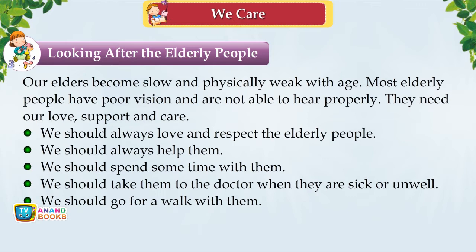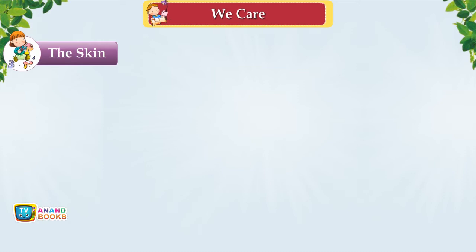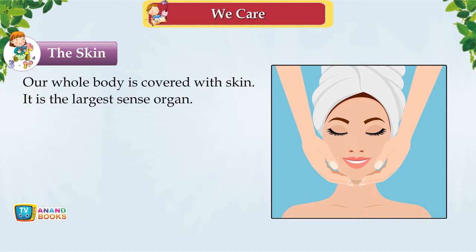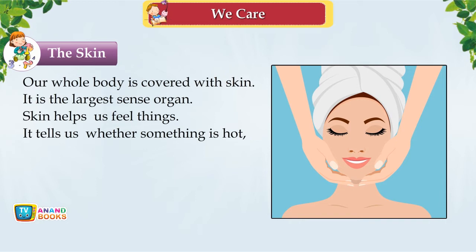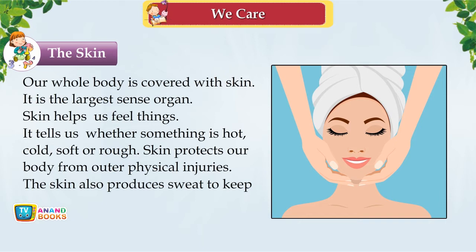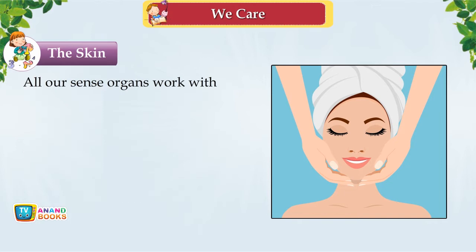The Skin. Our whole body is covered with skin. It is the largest sense organ. Skin helps us feel things — it tells us whether something is hot, cold, soft or rough. Skin protects our body from outer physical injuries and also produces sweat to keep our body cool when it is very hot. All our sense organs work with the help of our brain, and we should take proper care of them.